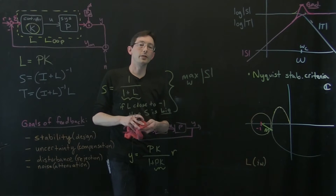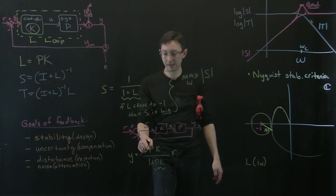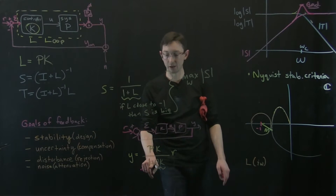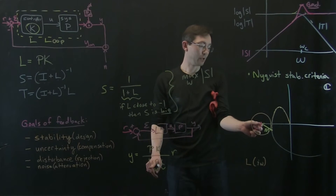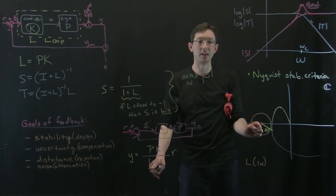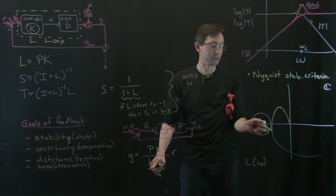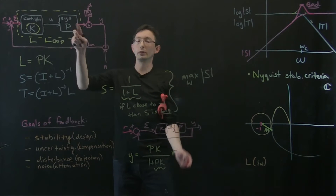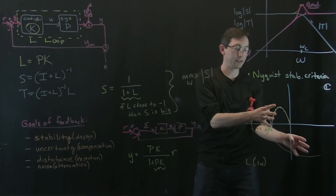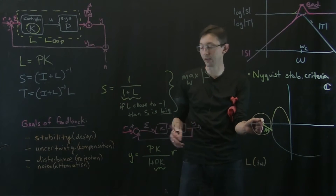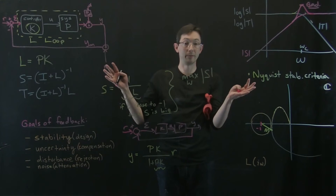The basic idea is that if the loop transfer function ever gets close to negative one — at any frequency in the complex plane — the system is fundamentally non-robust. That means if there's a little bit of increase or decrease in gain, or a little bit of a time delay or phase delay that rotates things, it could touch the negative one point and blow up.